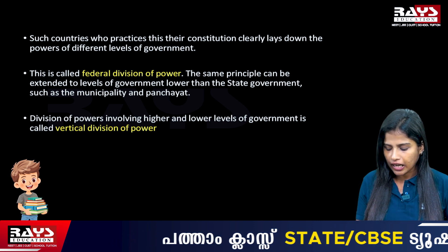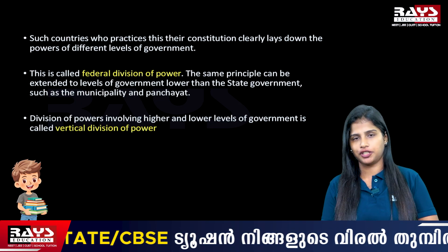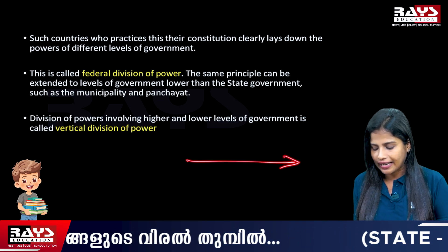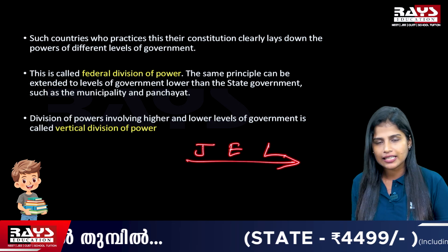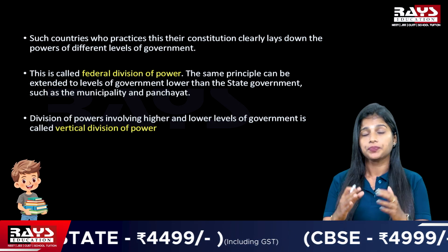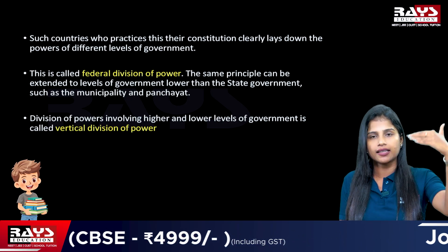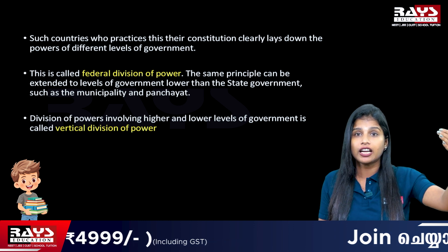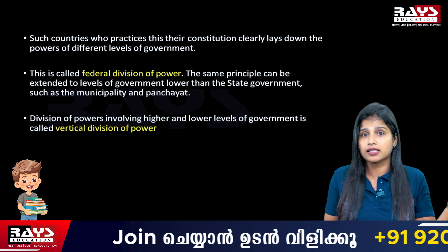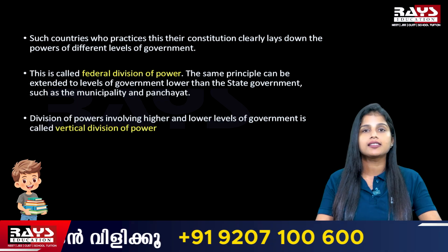The division of power involves higher and lower levels of government, so this is also known as the vertical form of power sharing. In contrast to the first form — horizontal — where legislature, executive, and judiciary practice equal power at the same level, this second form works from the top down: there is a central government for the entire country, then state governments, then local self-governments.